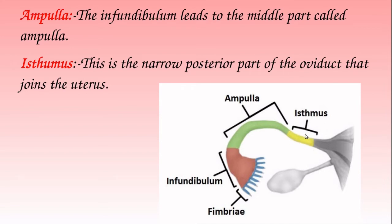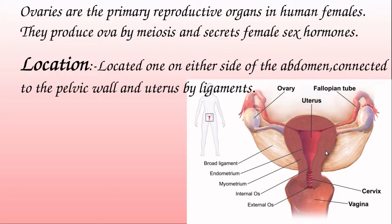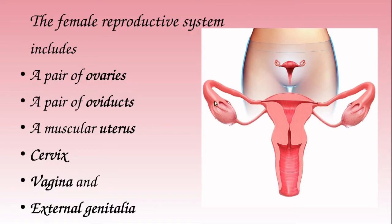The third part is the isthmus — the narrower posterior part of the oviduct that connects to the uterus. So the oviduct goes from the wider infundibulum with fimbriae, to the middle ampulla, and then to the narrower isthmus which joins the uterus.